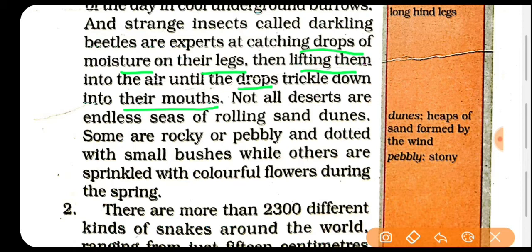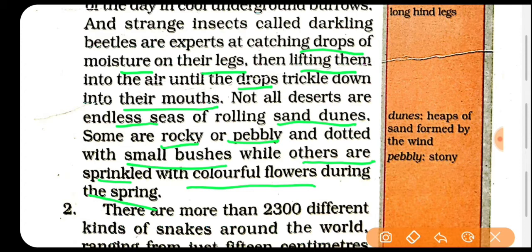Sab hi deserts jo hain woh endless sea of sand nahi hain — bilkul ek taraf mitti se nahi bane hue hain. Kuch rocky hain, chataanon se bane hue hain, kuch patharon se bane hue hain, aur kuch mein kuch small bushes bhi hain — jhaadiyan bhi hain, means kuch ped podhe bhi hain. And others are sprinkled with colorful flowers — colorful flowers se bhi hote hain spring season mein. Means jab kabhi baarish ho jaati hai to wahan pe flowers bhi hote hain.